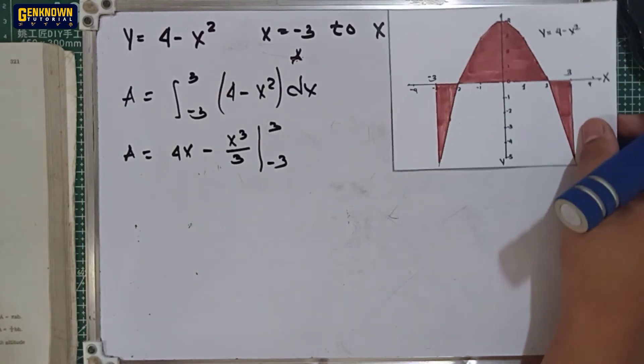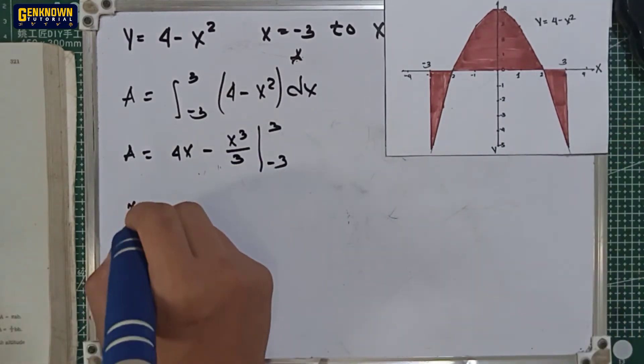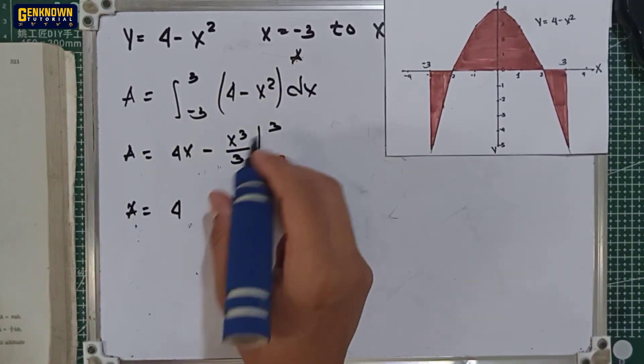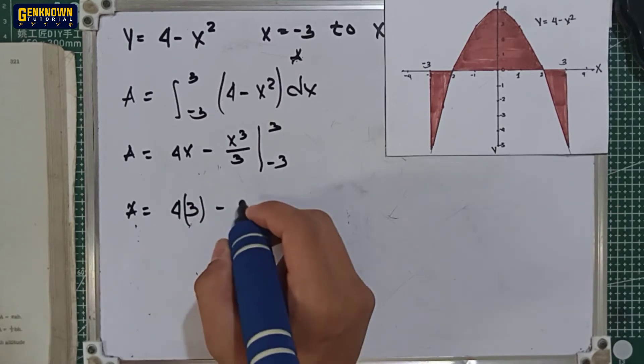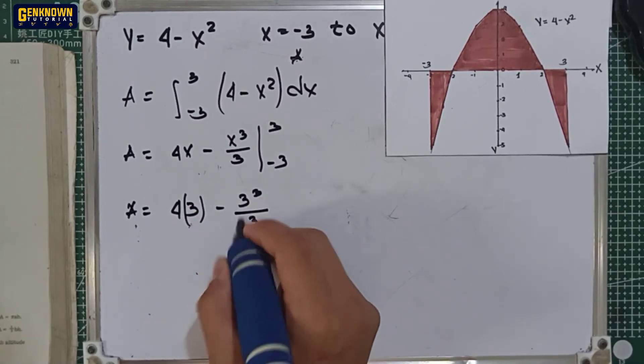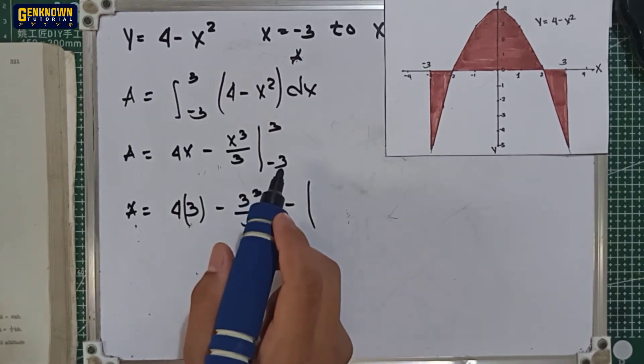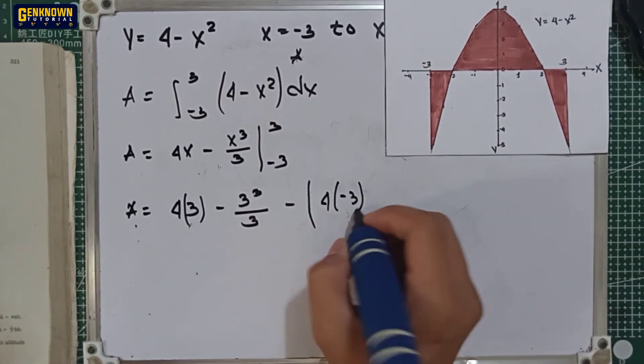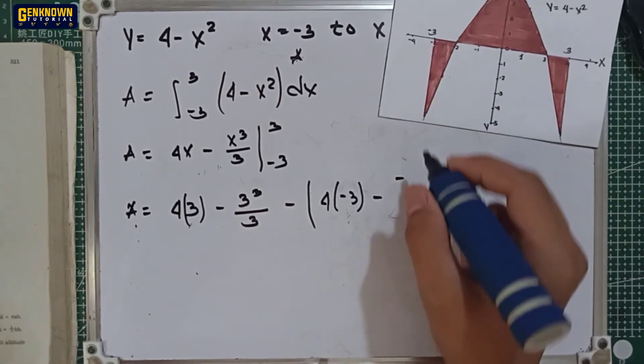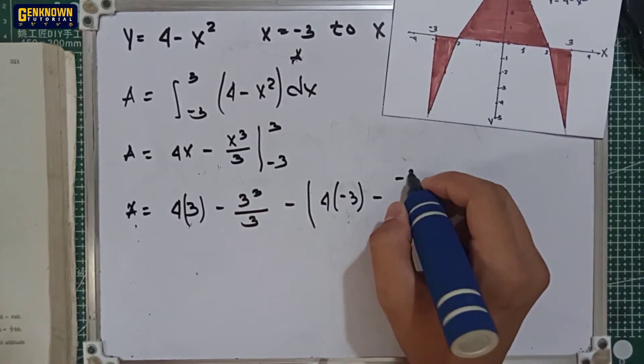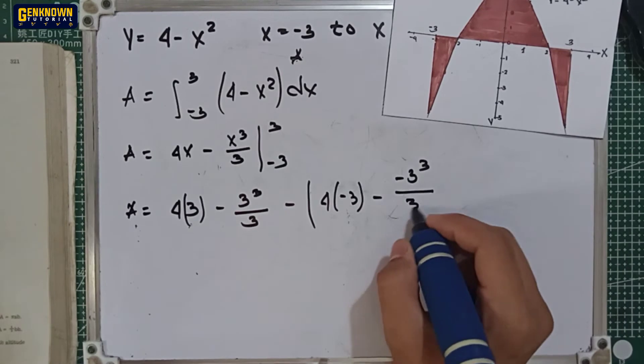Next thing we should do is to distribute the limits. So area is equal to 4 multiplied by 3 minus 3 cubed over 3, minus 4 multiplied by negative 3 minus negative 3 raised to 3 over 3.